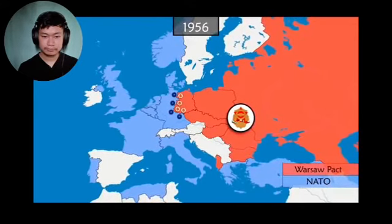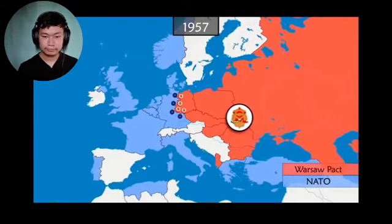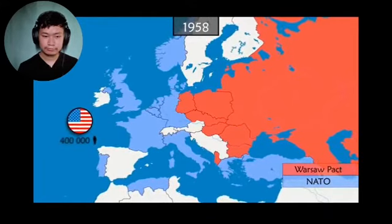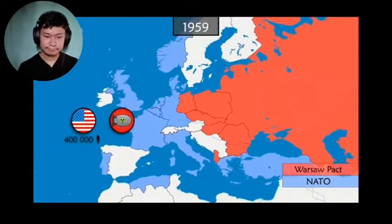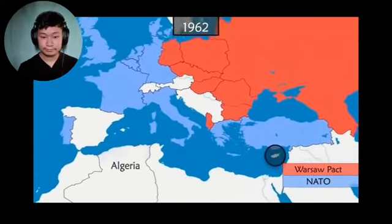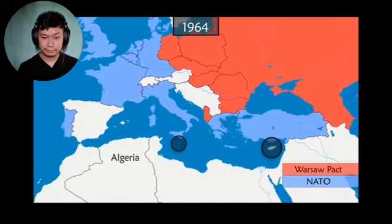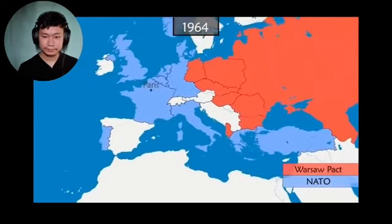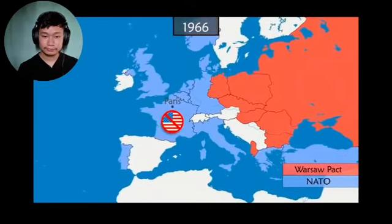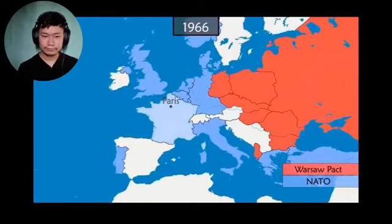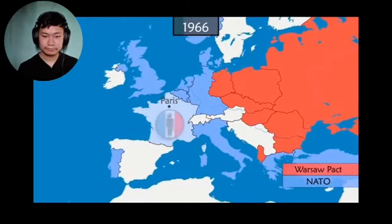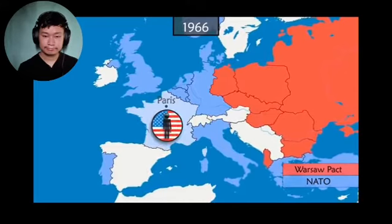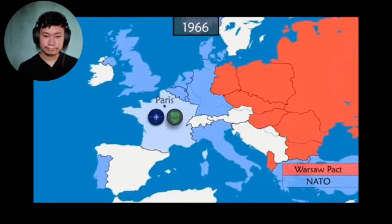The armies of the two alliances mainly face each other on either side of the border that divides Germany. The United States, which has approximately 400,000 soldiers on European soil, is now betting on nuclear weapons and installing nuclear missiles in Europe. Within a few years, Cyprus, Algeria, and then Malta gain their independence, but none of the three new countries applies to join NATO. In France, President Charles de Gaulle is opposed to US dominance within the alliance. He decides that France must leave NATO Integrated Command, while still remaining a member of the alliance. French troops will no longer participate in NATO military actions, the 30,000 US troops present in France must leave, and NATO headquarters and military command are moved to Belgium.